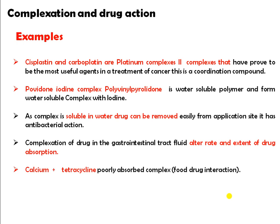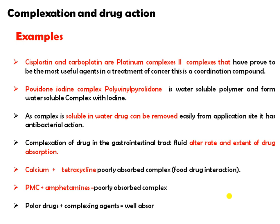Complexation of a drug in gastrointestinal tract fluid can alter the rate and extent of drug absorption. For example, calcium plus tetracycline decreases absorption of tetracycline. Similarly, PMC plus amphetamine forms a complex with less solubility and less absorption. When a polar drug is administered along with a complexing agent, that polar drug will be absorbed well.